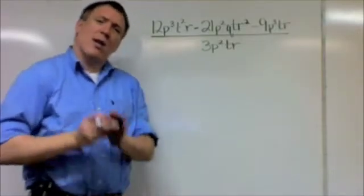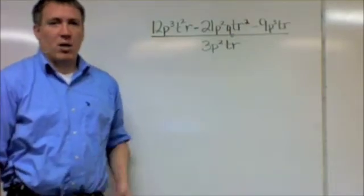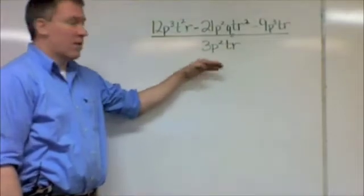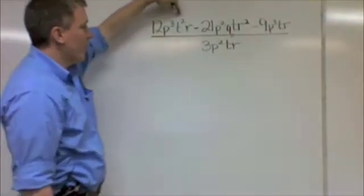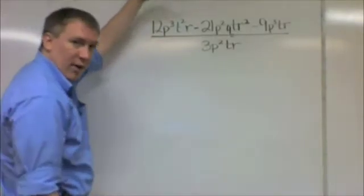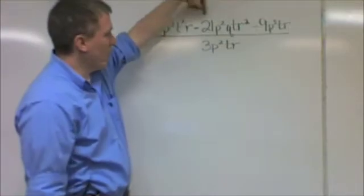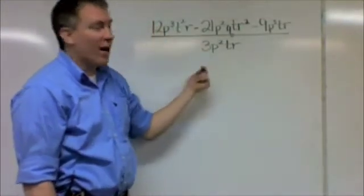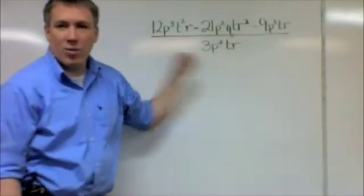The rule is basically the distributive property, but with division. So what I'm going to do is I'm going to divide each part by this. There are three parts in the top, three monomials: 12p³t²r, that's one. So I'm going to divide this by that, by the bottom, and then I'm going to go to the next one, 21p²qtr², and I'm going to divide that, and then lastly I'm going to divide 9p³tr by it as well.